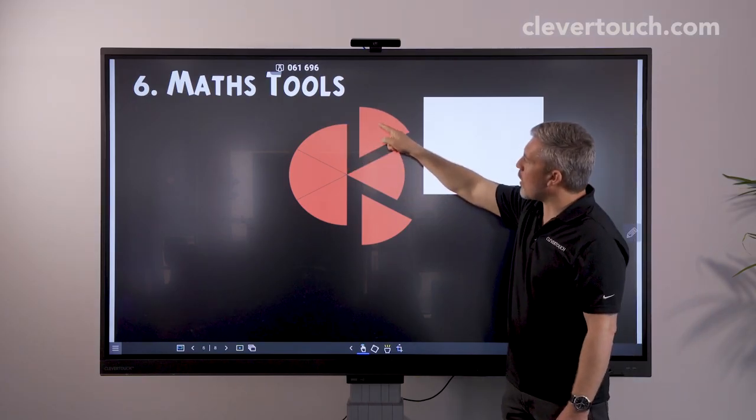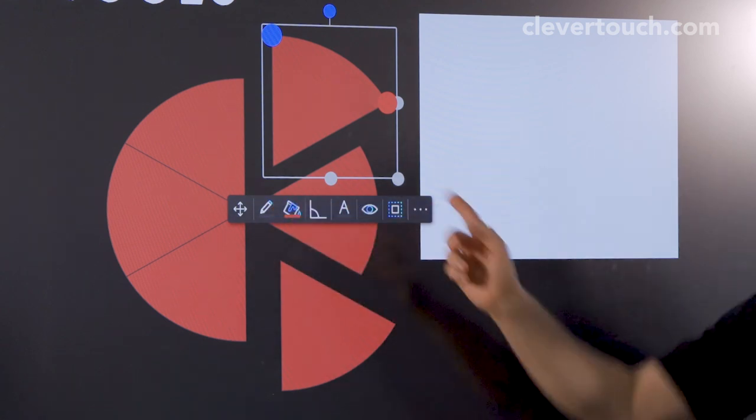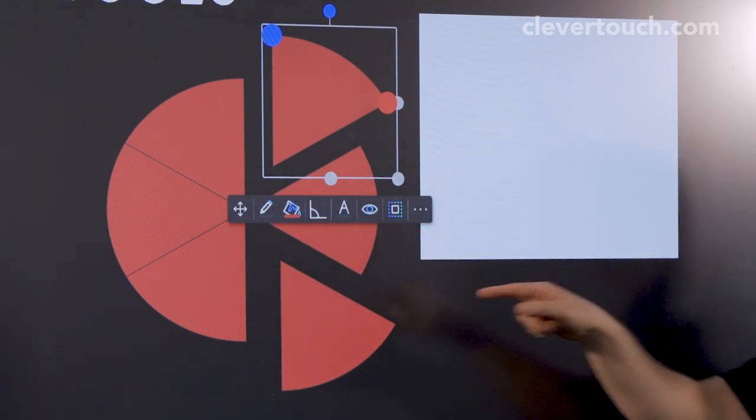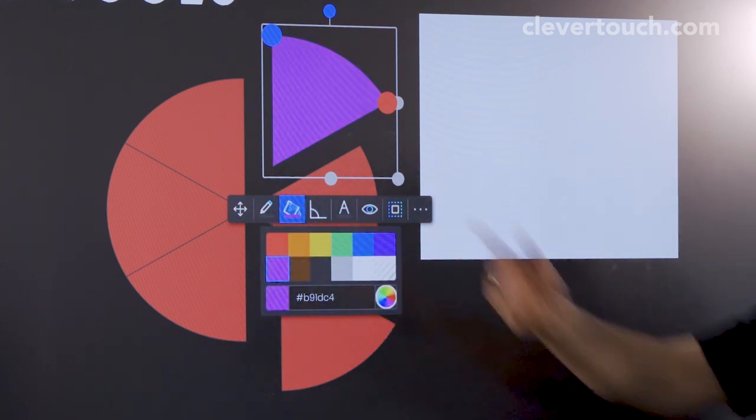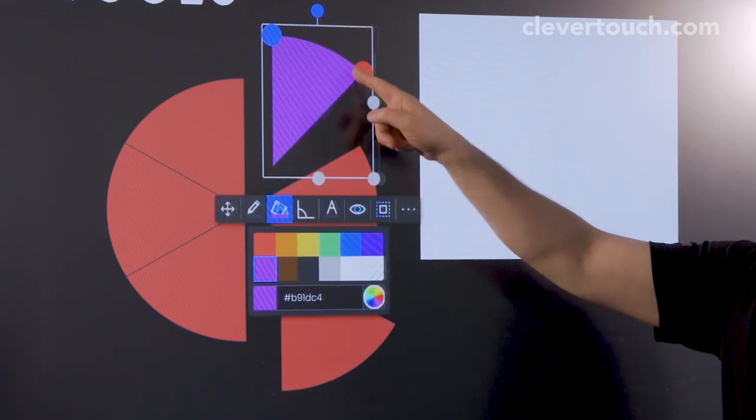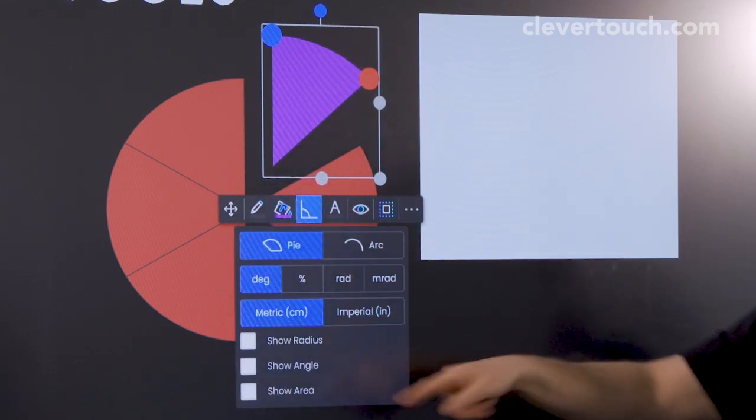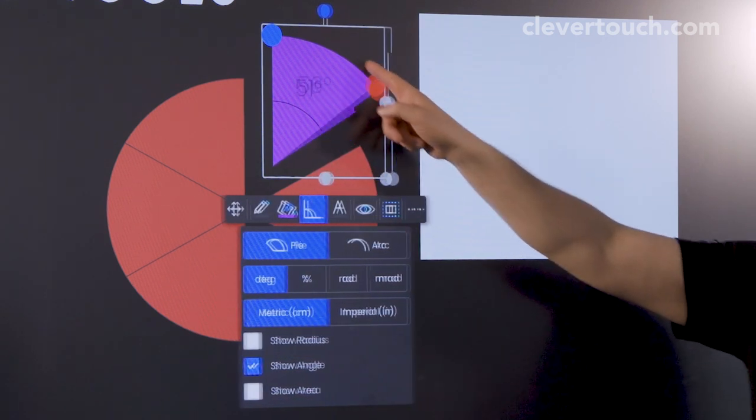And very easy to edit them as well because of course whenever you click on something in Lynx Whiteboard you get the floating toolbar, you're not searching menus. All of the various tools you can use they're here. So if I want to change the colour of that I can do it really quickly and of course I can mess around with the size and so on and I can also choose to do things like show the angle size of those sectors as well.